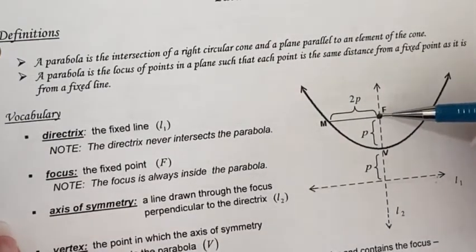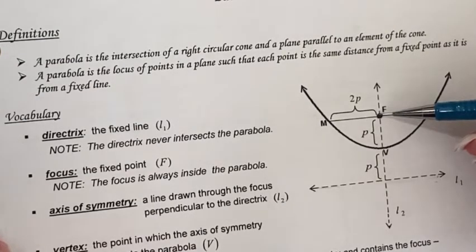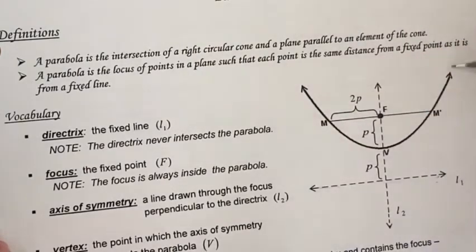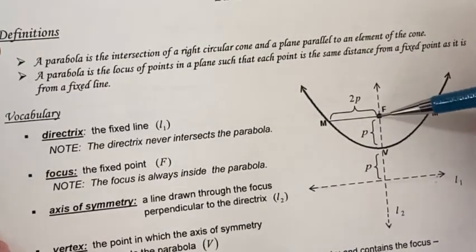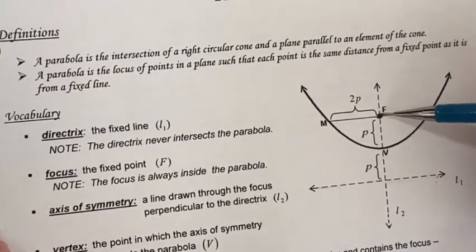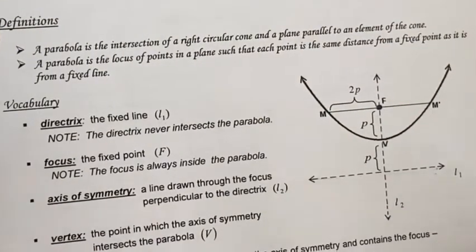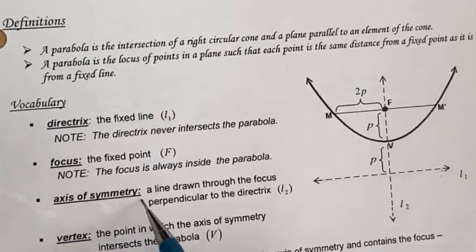The focus is the fixed point F, and it's always inside the parabola. A good way to remember the focus: imagine the parabola is the shade of a lamp, and the focus is the bulb — that's always how you can remember the location of the focus.